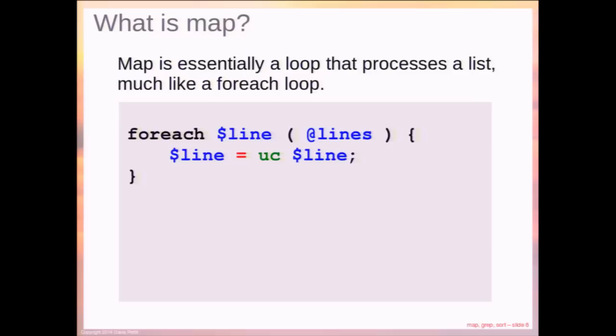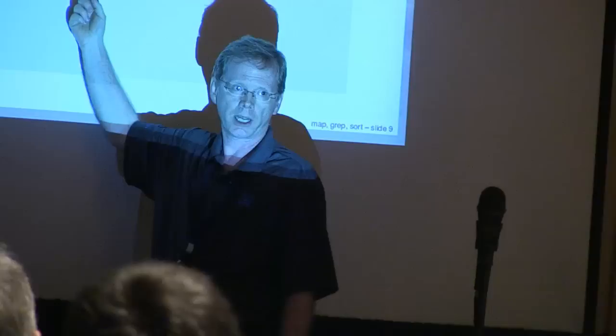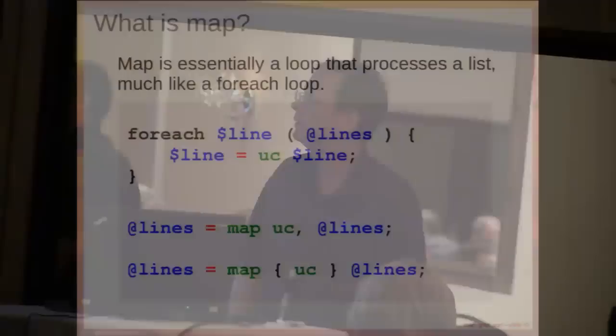Map is kind of like a foreach. If you understand foreach, it goes through a list and you do something for each element. Here we have an example of a simple foreach using 'uc', which takes a string and upcases it to all uppercase. To do the same thing with map, all we have to do is say: lines equals map uppercase, and give it the list. It's a little simpler than a foreach. Here we're using it without the block notation for a bit more efficiency. There's also an alternate block form — those are all equivalent.